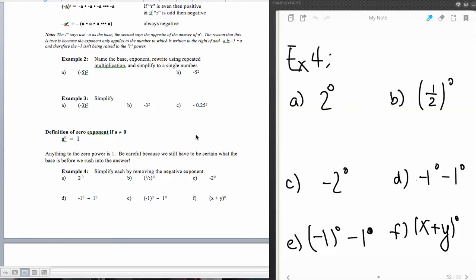Now we do have to be careful of that opposite of a number raised to a power thing here, and we're going to call that out in an example or two. So our first one, 2 to the zero power, anything to the zero power is always one. One half to the zero power, anything to the zero power is always one.